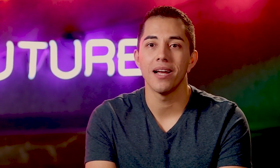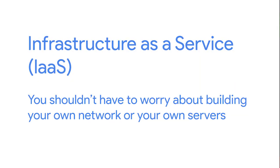In our last video, we gave you a basic definition of what cloud computing is. But the term has really come to mean so much more than just hosting virtual machines. Another term that's been used more and more with the rise of cloud computing is X as a service. The way we've described the cloud so far would probably best be defined as infrastructure as a service, or IaaS. The idea behind IaaS is that you shouldn't have to worry about building your own network or your own servers — you just pay someone else to provide you with that service. We've also seen the definition of the cloud expand to platform as a service (PaaS) and software as a service (SaaS).